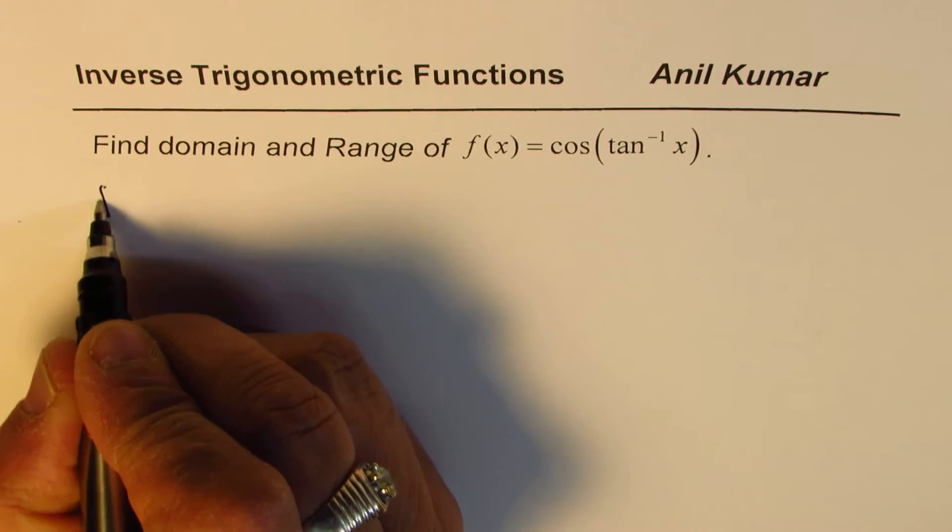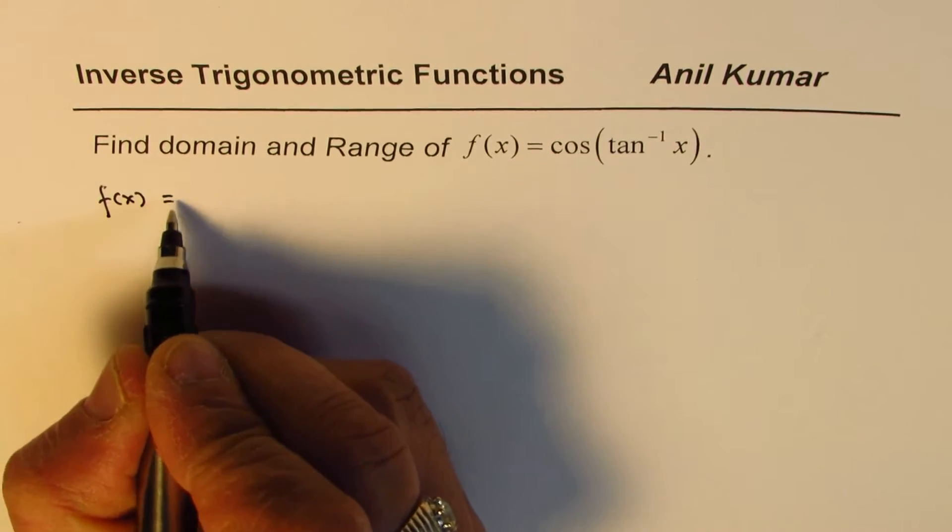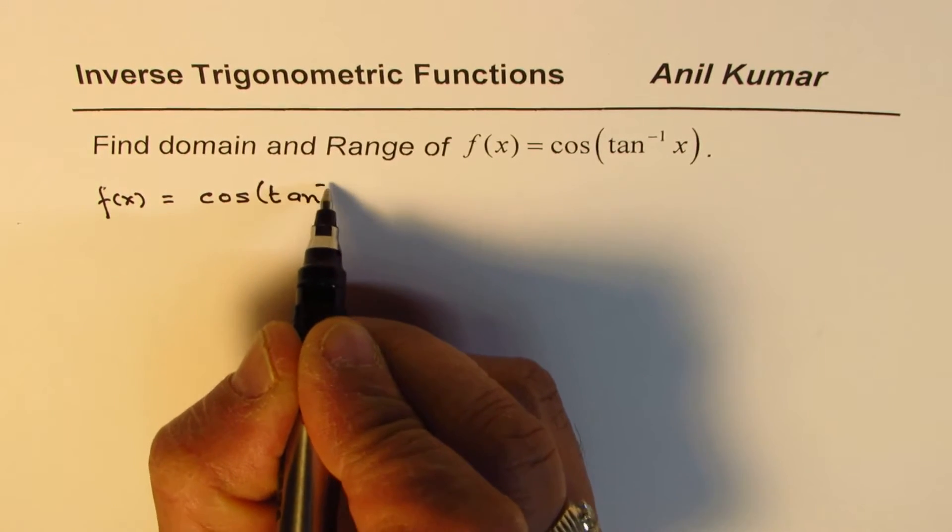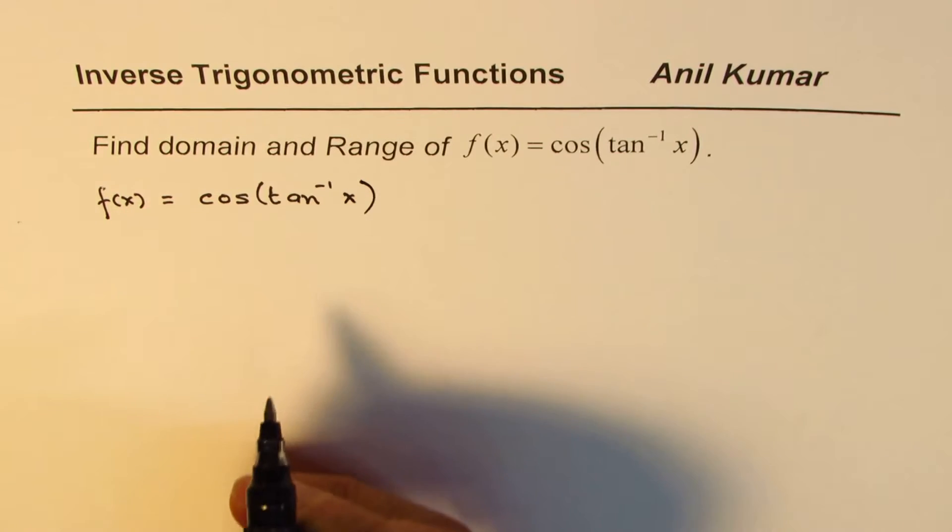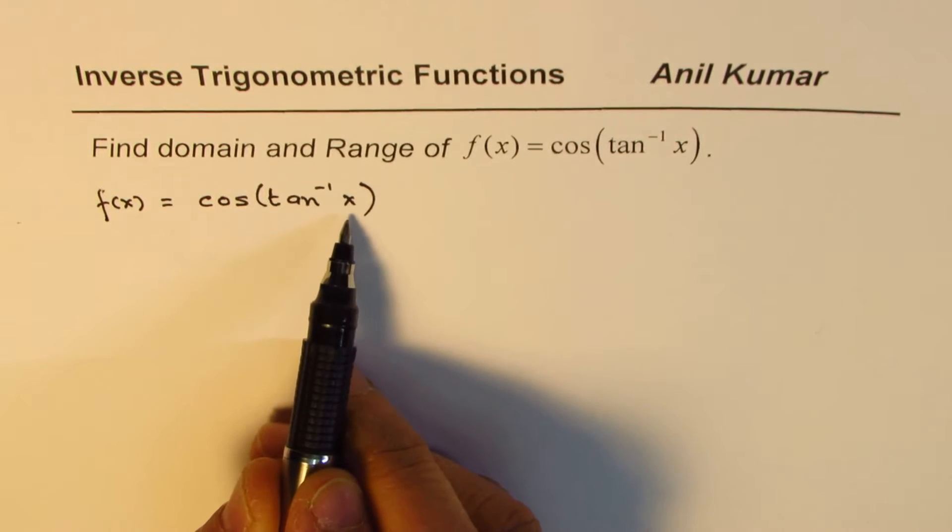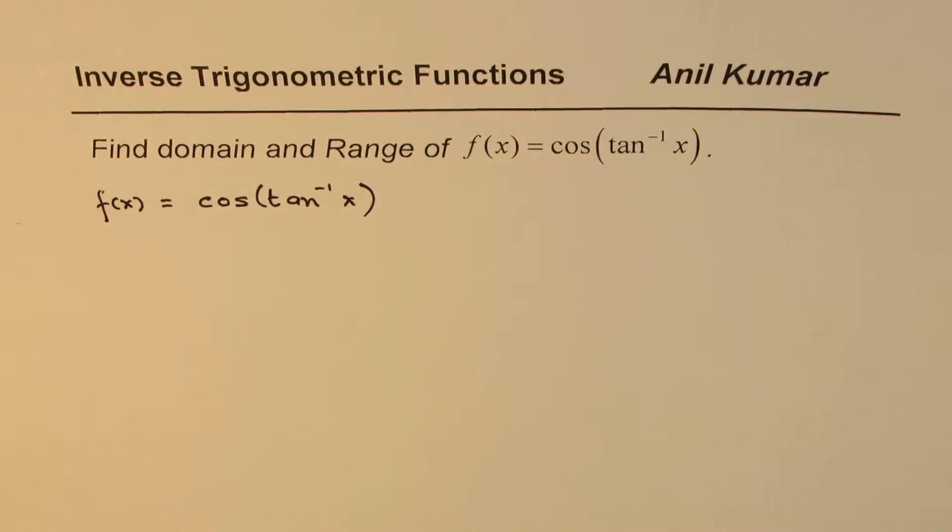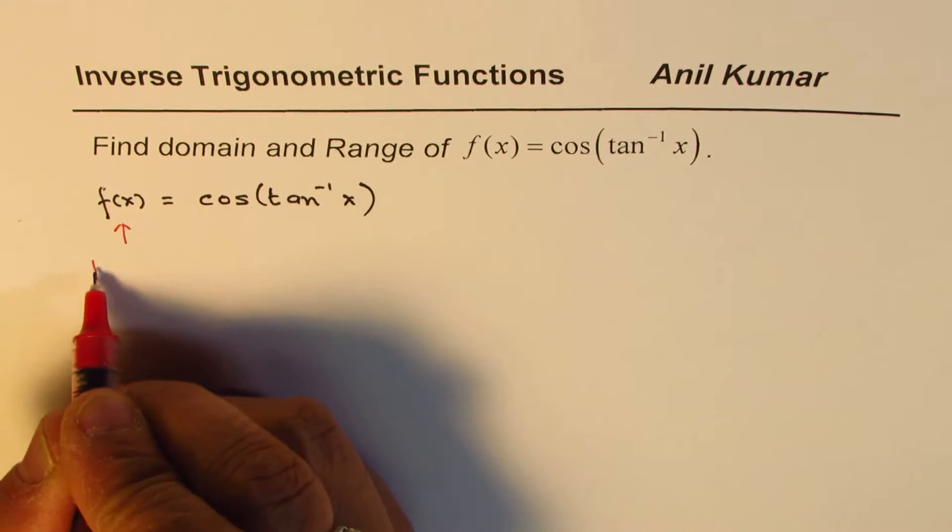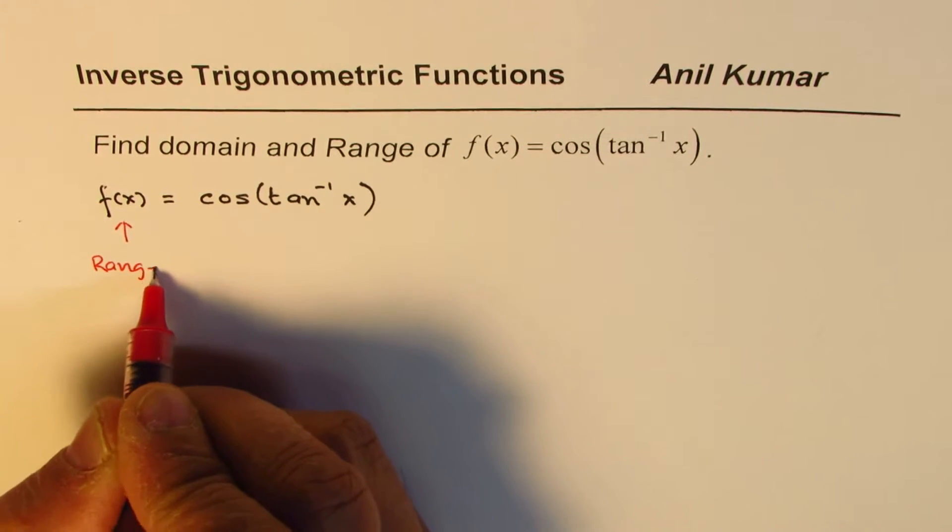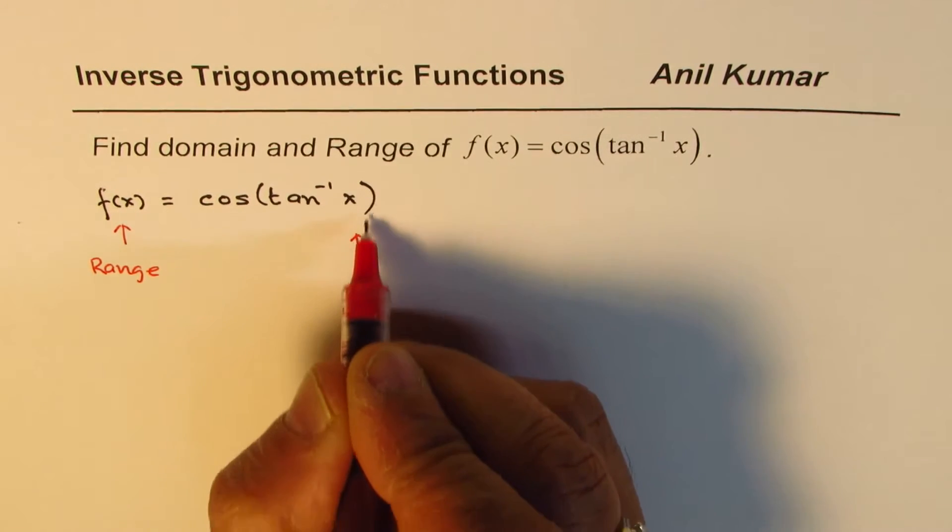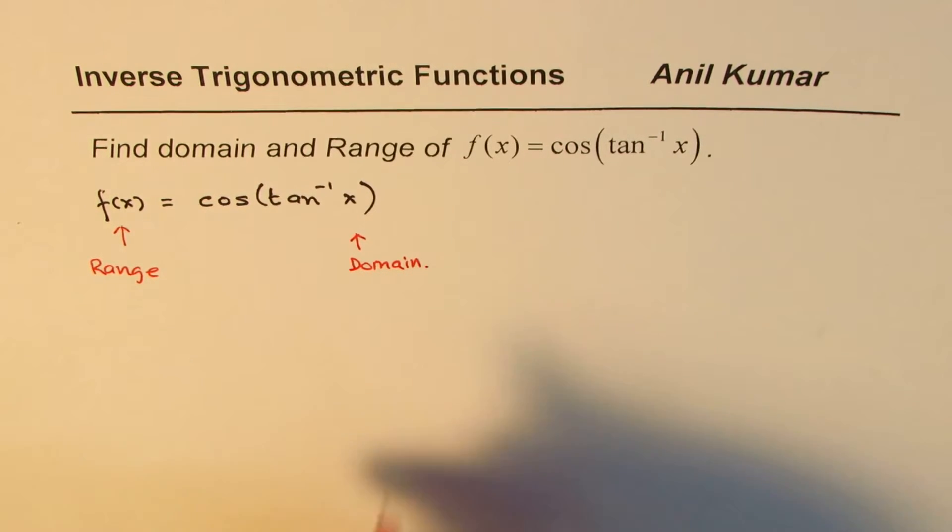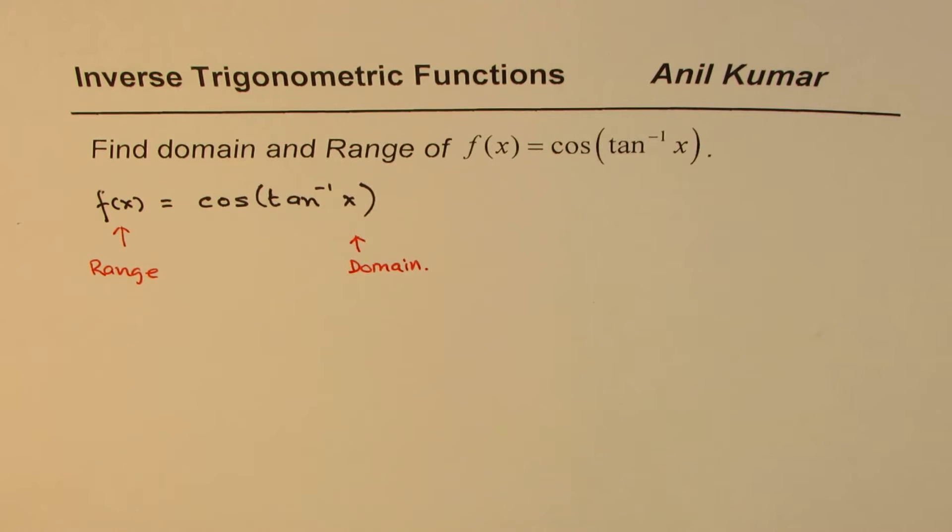When we are working with these functions, let me rewrite this. We have f(x) equals cos(tan⁻¹(x)). Domain is the values which x can take and f(x) is the range. This gives you range and the values which x can take is the domain.